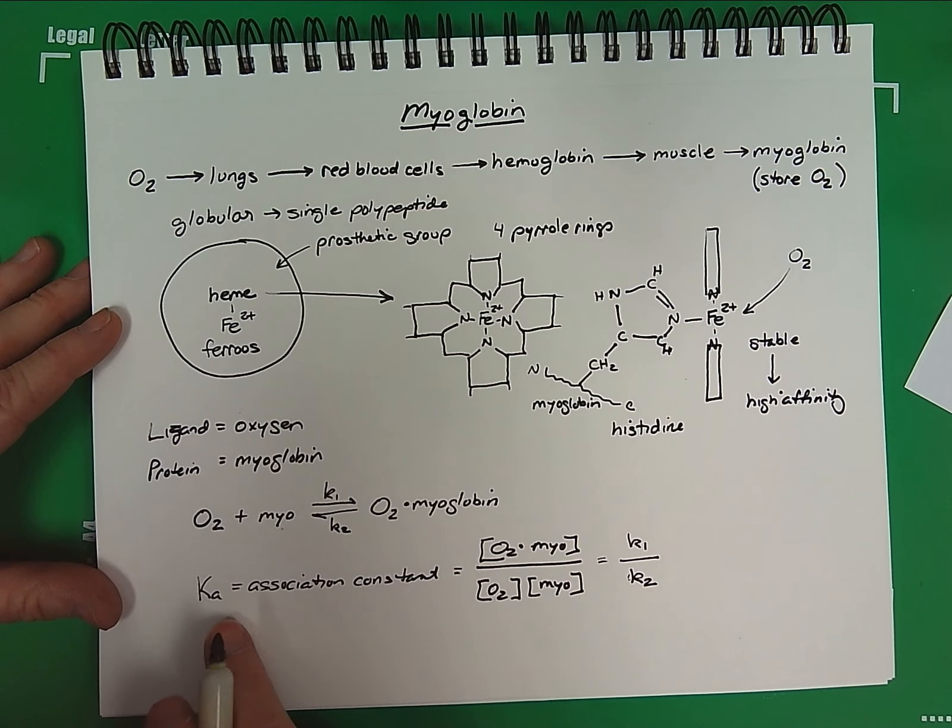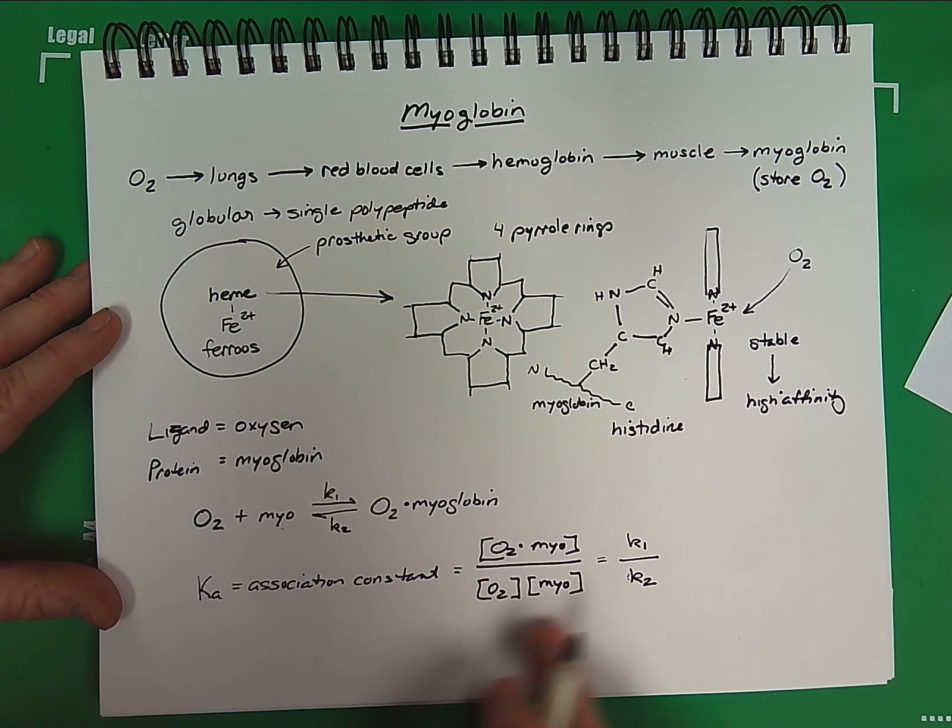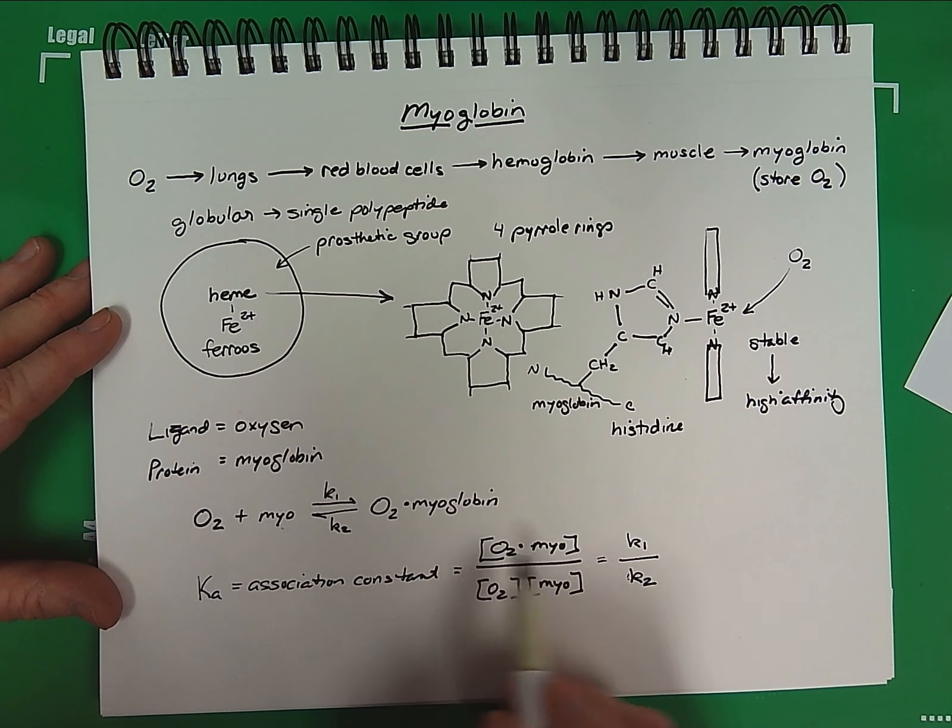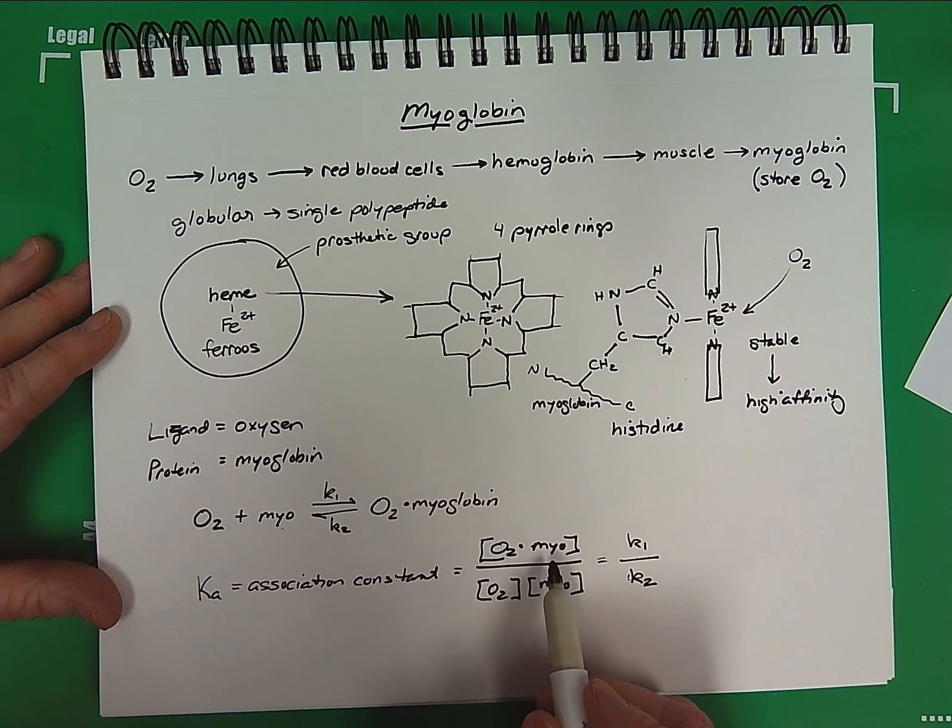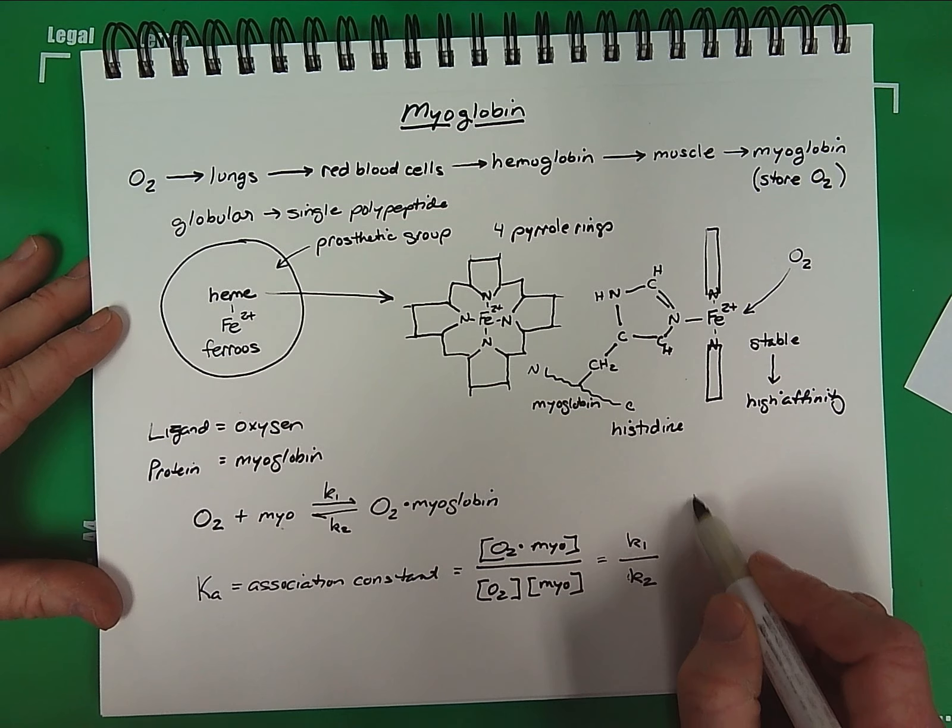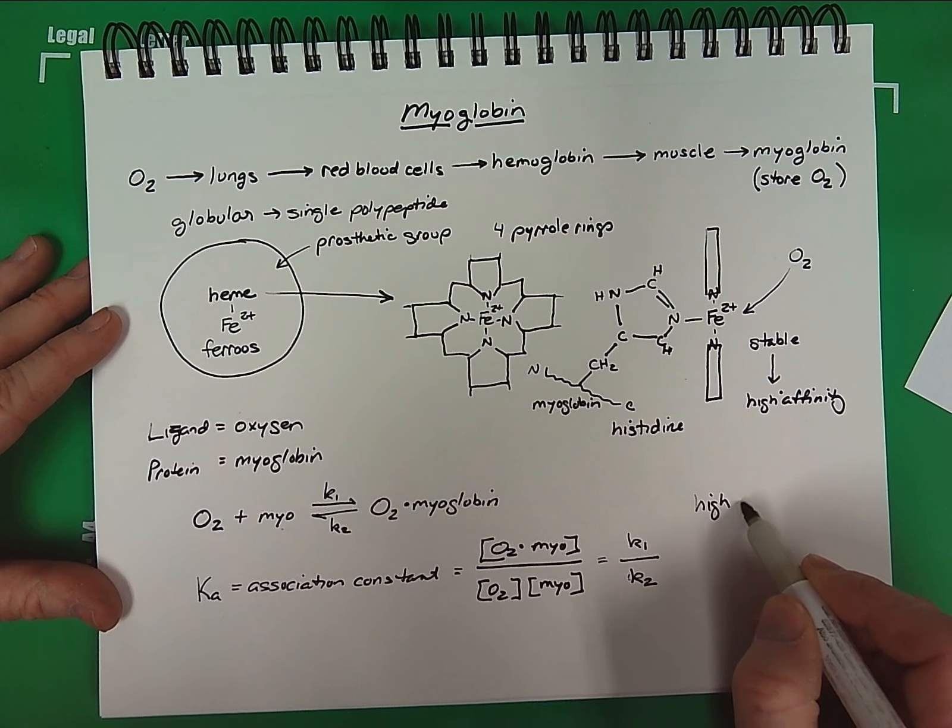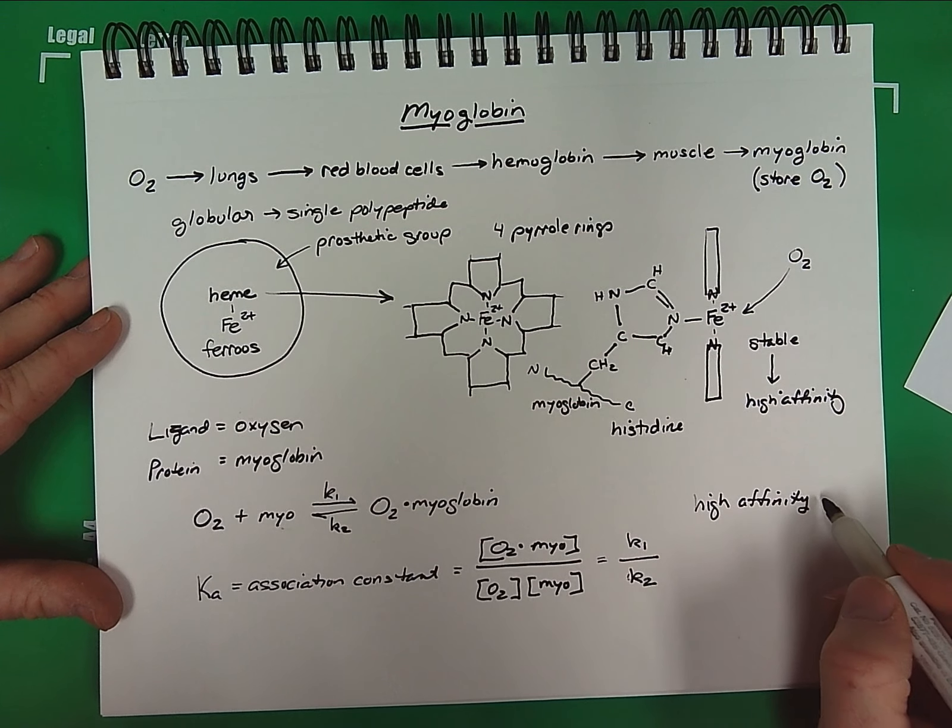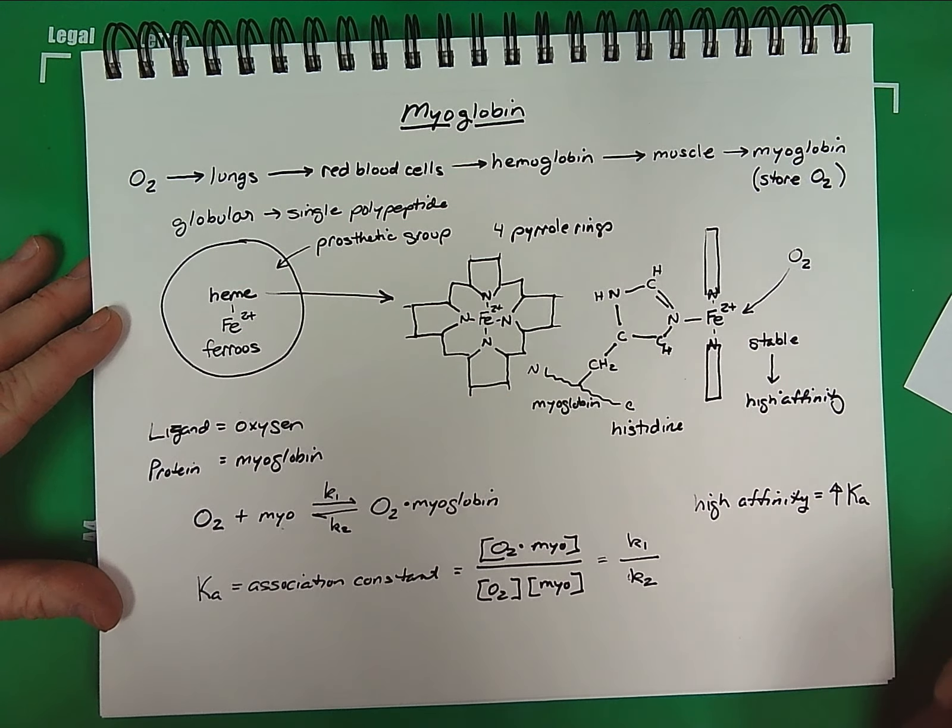So high affinity binding, if we apply this equation, indicates that we have a large amount of oxygen myoglobin complex formed relative to the concentration of oxygen and myoglobin. So this means that the reaction is being driven to the right. So high affinity means greater product formation, which equals a very high association constant.